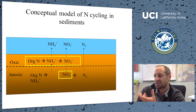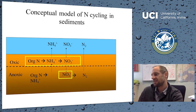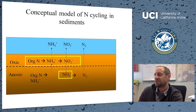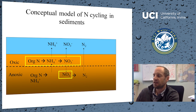Denitrification represents a sink for bioavailable nitrogen. N₂ gas is no longer bioavailable — it's two nitrogen atoms bonded with a very strong triple bond, not accessible to most organisms except nitrogen-fixing diazotrophs. Since that process is very energetically intensive, phytoplankton and algae get their nitrogen from the fixed forms: nitrate and ammonium. So denitrification is a true sink for nitrogen.